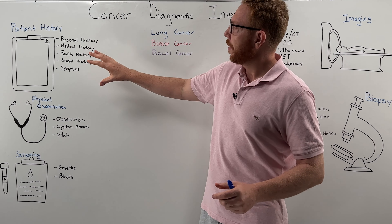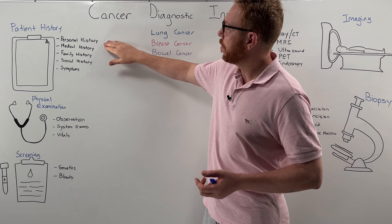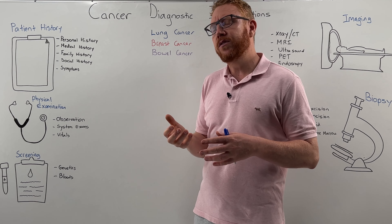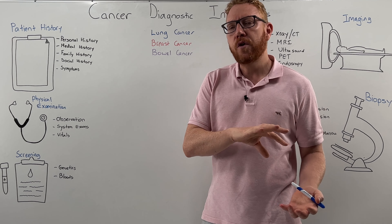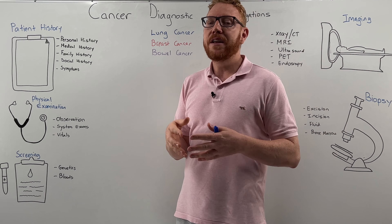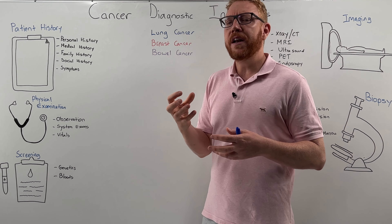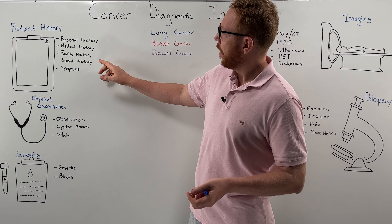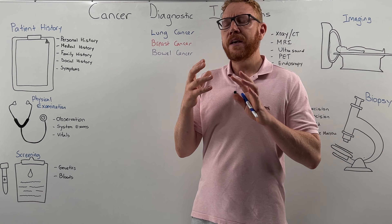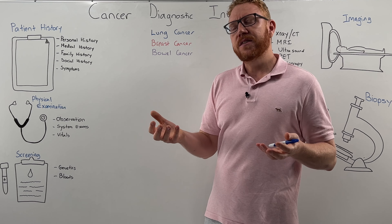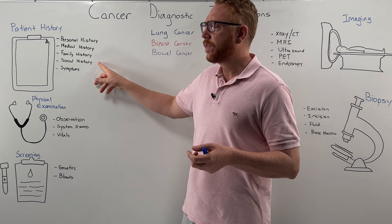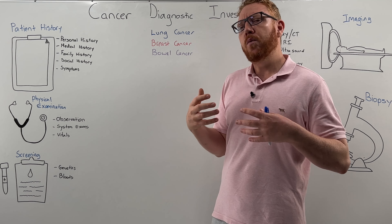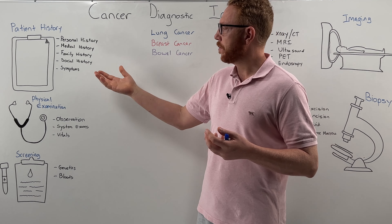First we have the patient history. This includes the personal history of the patient — their age and sex — as well as their medical history, such as prior surgery or a history of cancer. Family history is important, particularly any family history of cancers. Social history covers things like drinking, smoking, and exercise — any risk factors associated with cancer. And then symptoms: what the patient is presenting with.